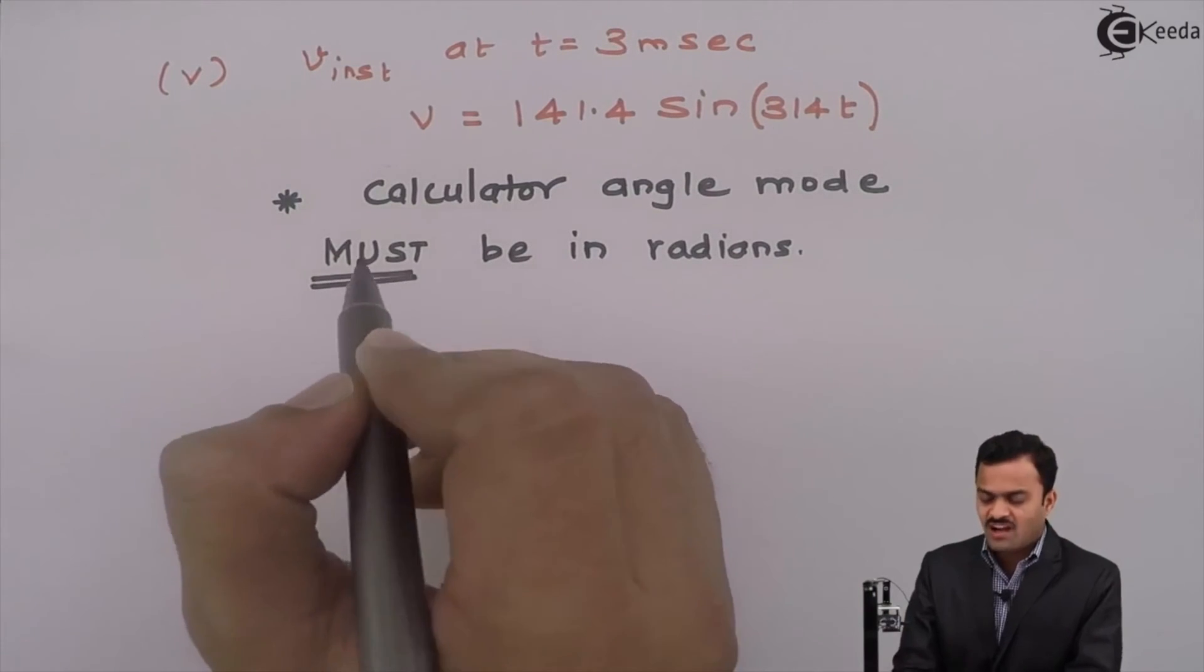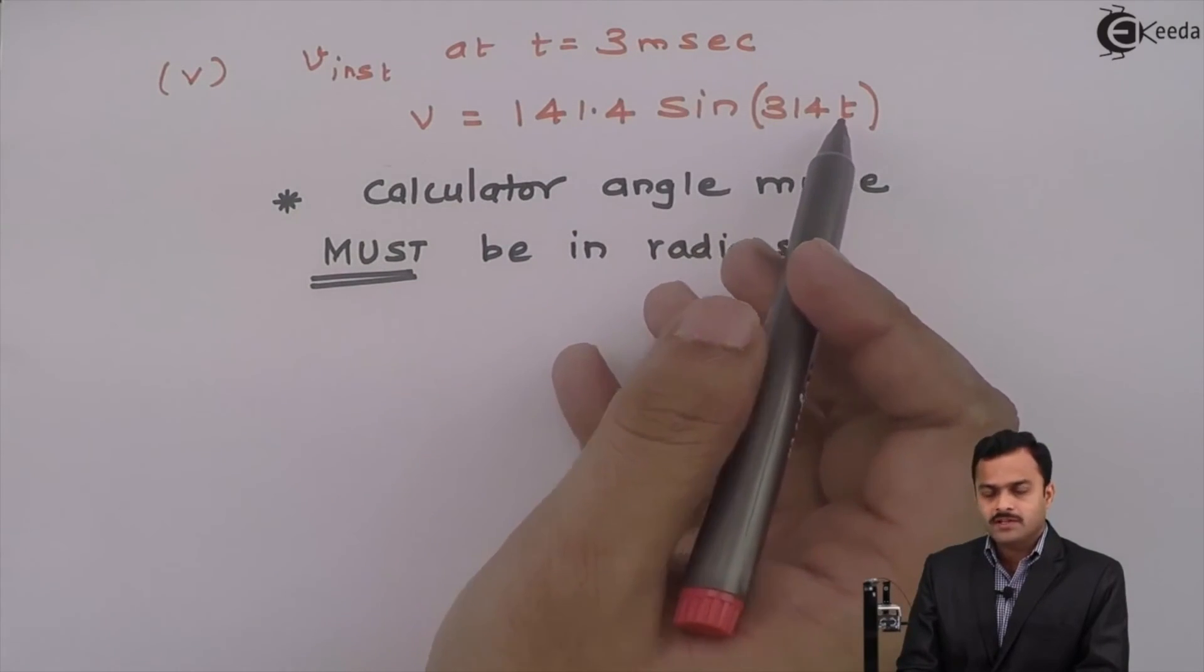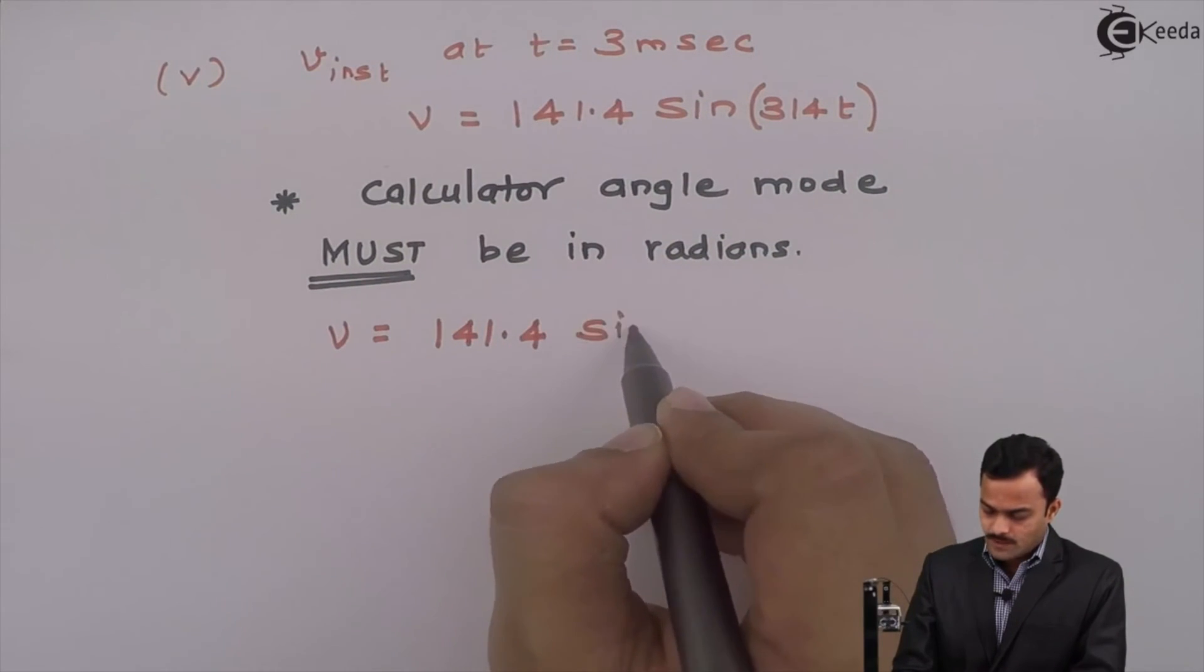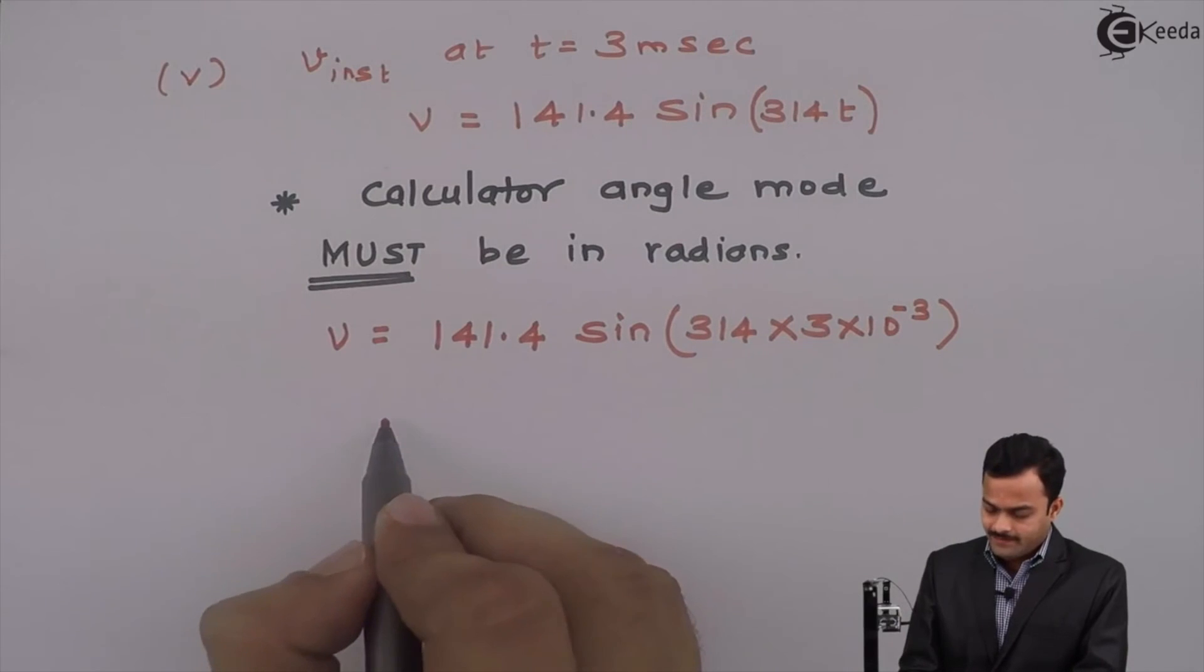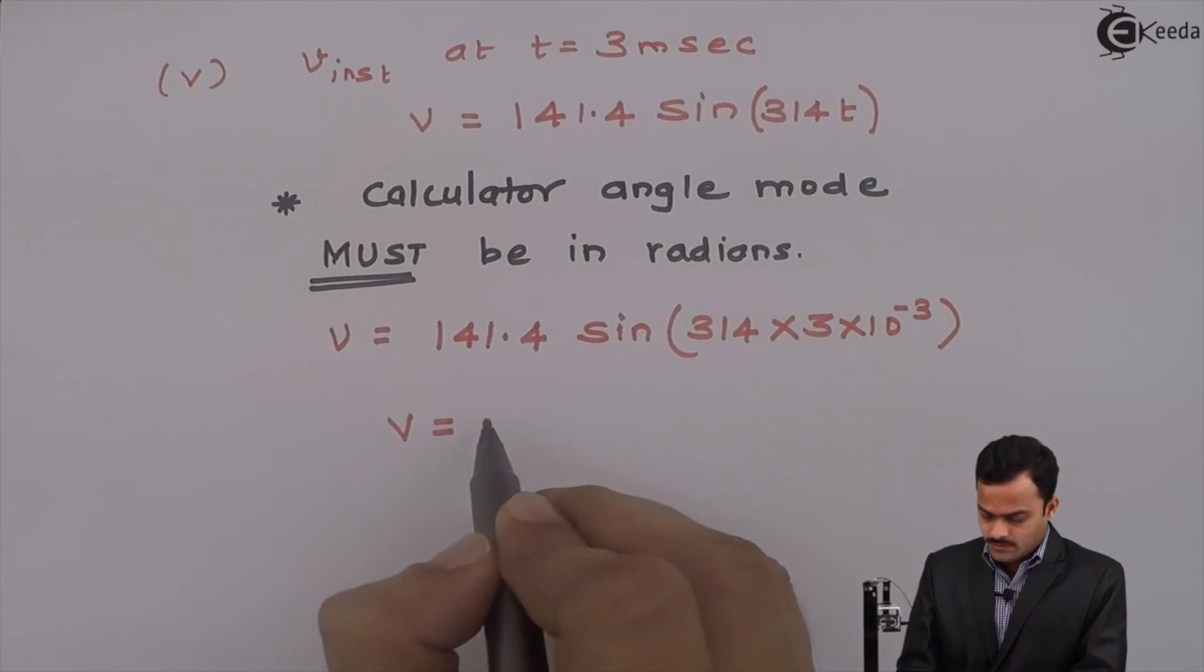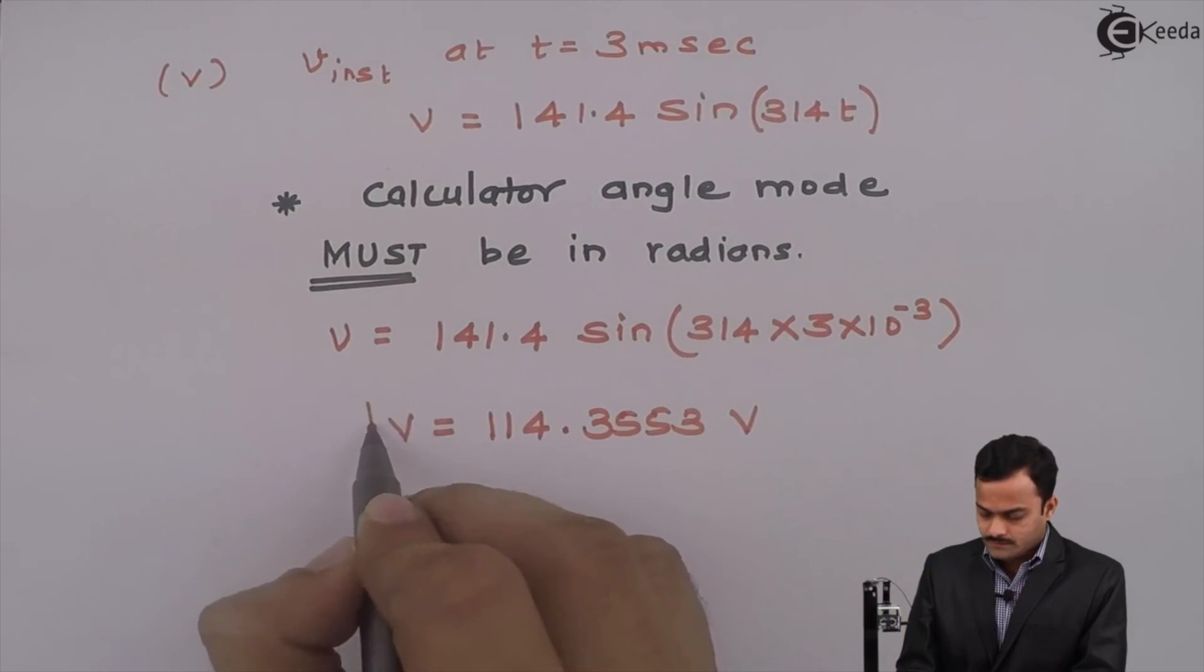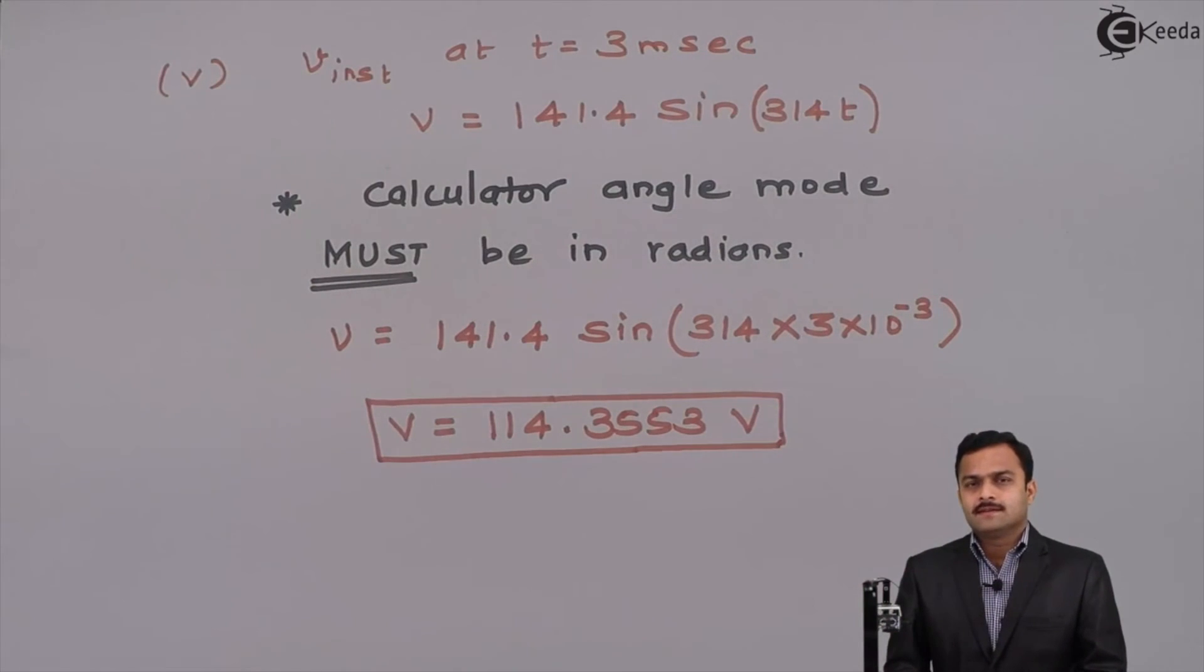It is very very important otherwise you will get wrong answer. While solving this, I will make sure that calculator angle mode is in radian and then I will substitute t equal to 3 milliseconds. I will get V equal to 141.4 sine 314 multiplied by 3 into 10 raised to minus 3. If I solve, I will get instantaneous value of voltage is 114.3553 volt. This is the required answer. Thank you.